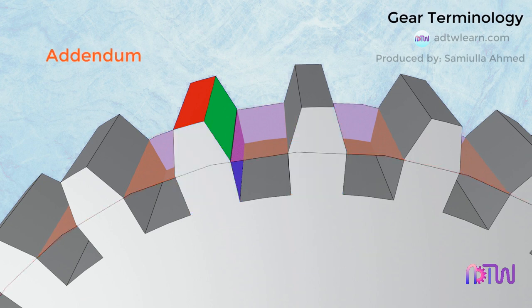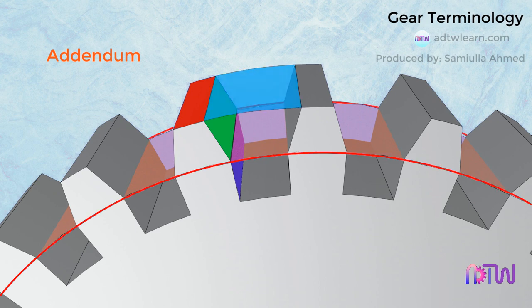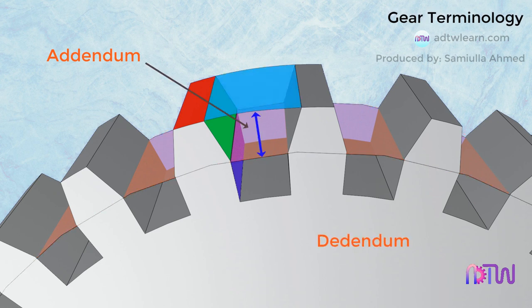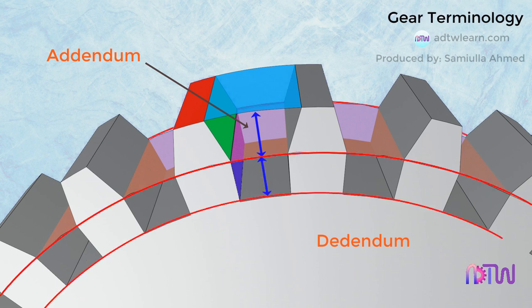Addendum. The distance between the pitch circle to the top of the tooth in the radial direction is called the addendum. Dedendum. The radial distance between the pitch circle and the bottom of the tooth is known as the dedendum of the gear.